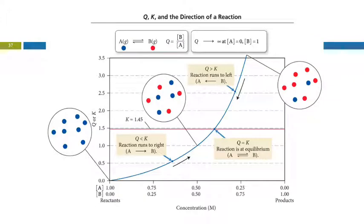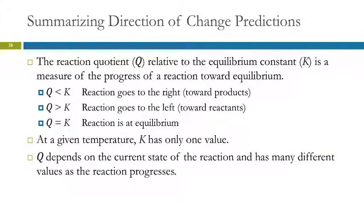We can predict direction by looking at the relative size of the reaction quotient compared to the equilibrium constant. If the quotient is smaller than the equilibrium constant, the reaction will go towards the right. In the forward direction, it will make more products. If the quotient is larger than the equilibrium constant, it will go to the left towards the reactants. At equilibrium, they will be equal.